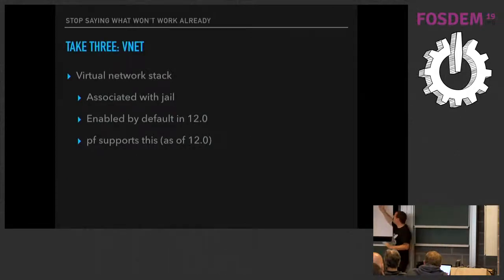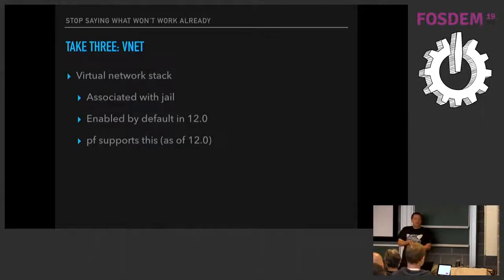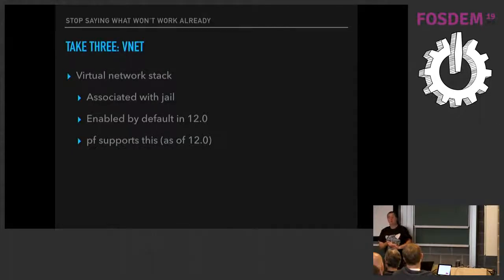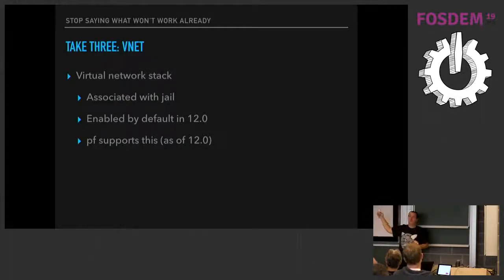What we finally wound up with is VNet. Before going into that, it's useful to explain what VNet is. VNet is virtual IP stacks. Linux has jails — like containers, but we've had them a lot longer. You can associate an IP stack with a jail, which means from inside the jail you can set an IP address, run a DHCP client, and configure a firewall. This has been enabled by default since FreeBSD 12 — the latest release, everybody should be running 12. PF supports this now, meaning I don't know of any way to make it panic, though I'm sure there are some.